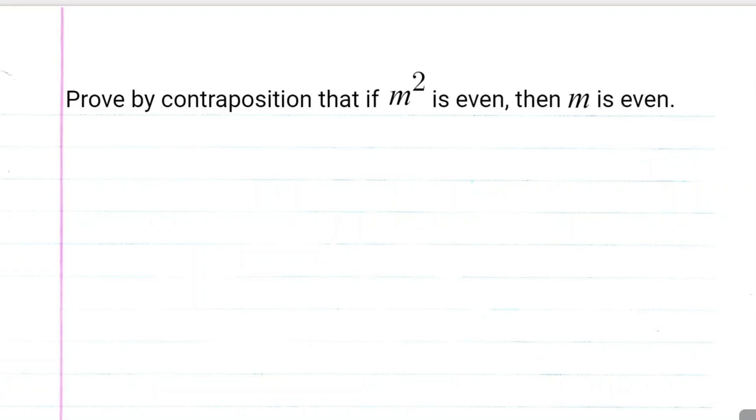We're going to prove by contraposition that if m squared is even, then m is even. Recall that p implies q, or if p then q, is equivalent to not q implies not p.